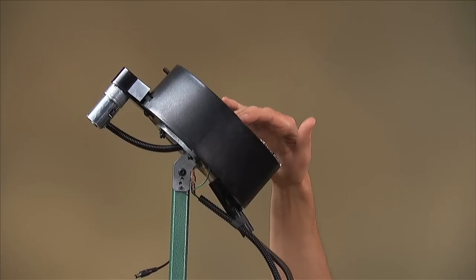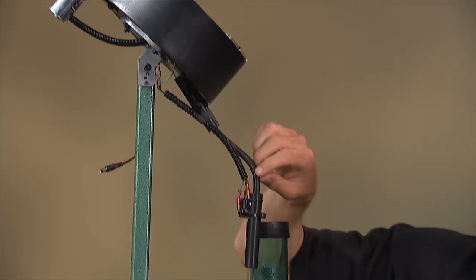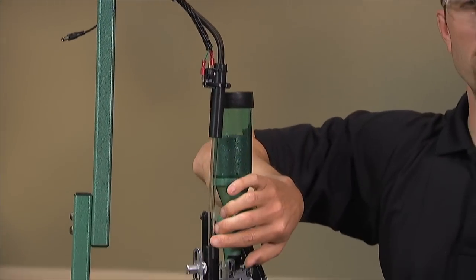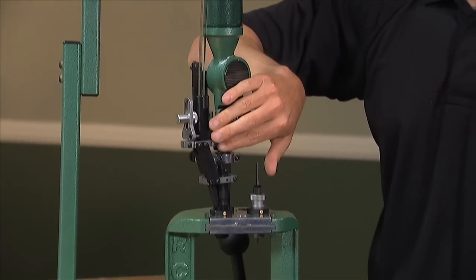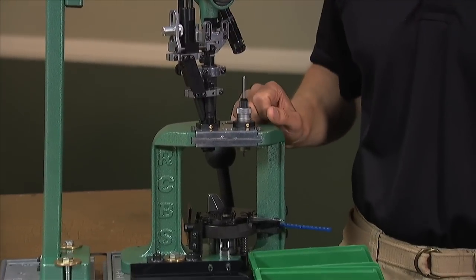This collator will sort and stack your bullets into this tube and drop them into this feed mechanism. It's designed to interface with most 7/8-14 progressive presses.